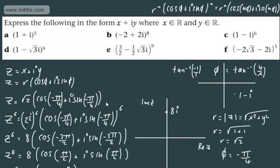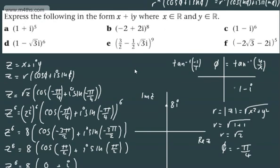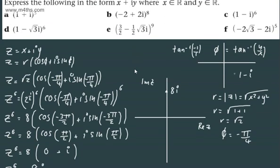So nice and straightforward-ish. All you've got to know is De Moivre's theorem and simply be able to convert between Cartesian and polar form.